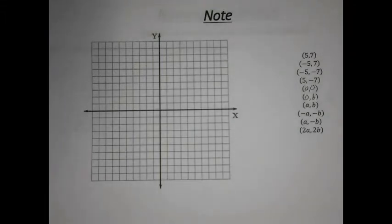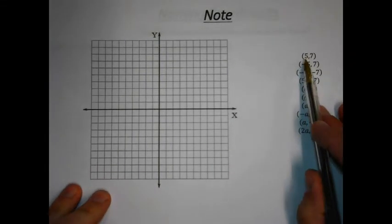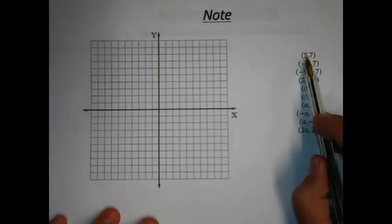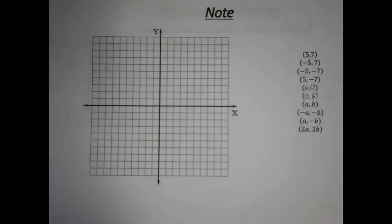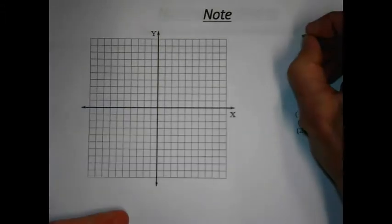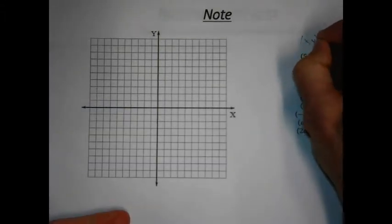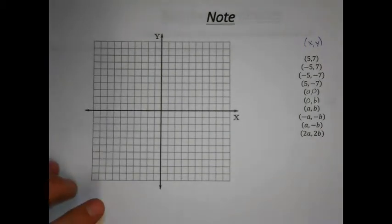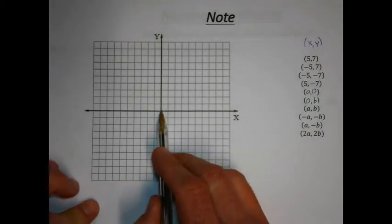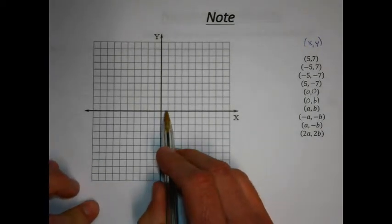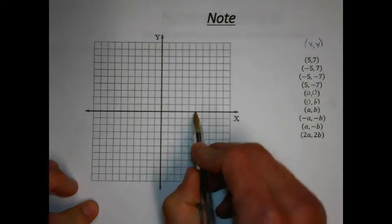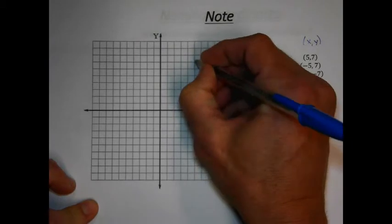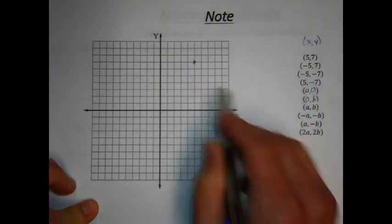We're going to start with a coordinate plane with our x and y axis, graph some ordered pairs, and then get abstract. The first ordered pair we'll graph is (5, 7) — that's 5 on the x and 7 on the y. Counting from the origin: 1, 2, 3, 4, 5 on the x, then 1, 2, 3, 4, 5, 6, 7 on the y. There's our ordered pair (5, 7).